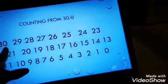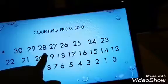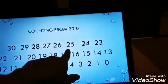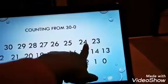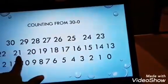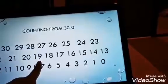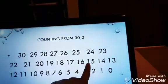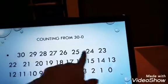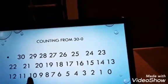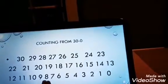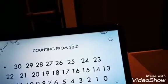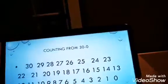Let's go. 30, 29, 28, 27, 26, 25, 24, 23, 22, 21, 20, 19, 18, 17, 16, 15, 14, 13, 12, 11, 10, 9, 8, 7, 6, 5, 4, 3, 2, 1, and 0.